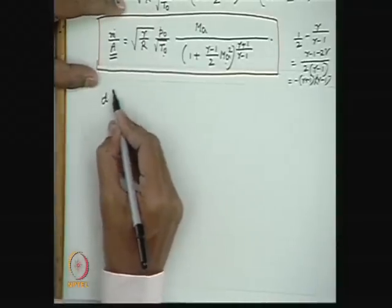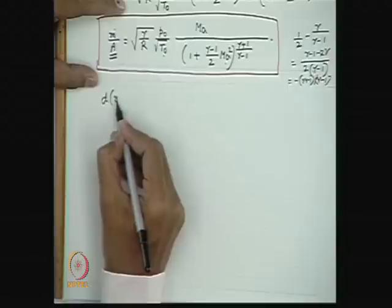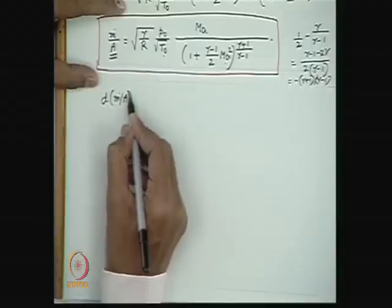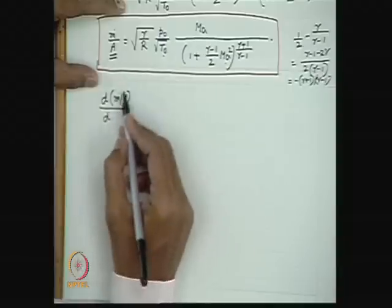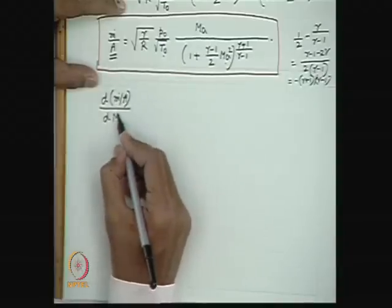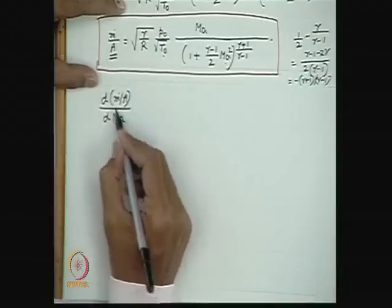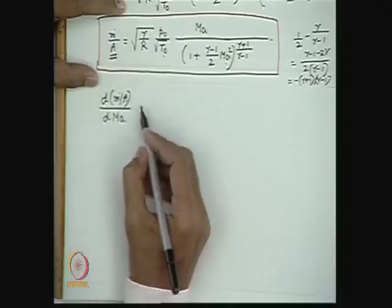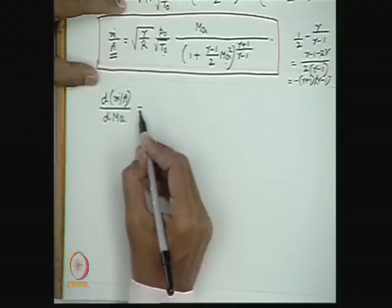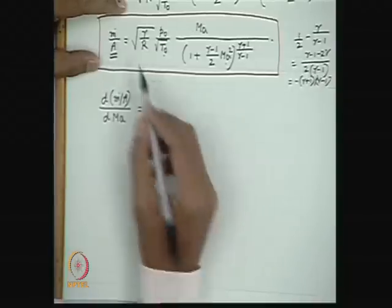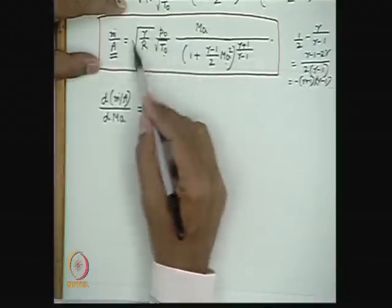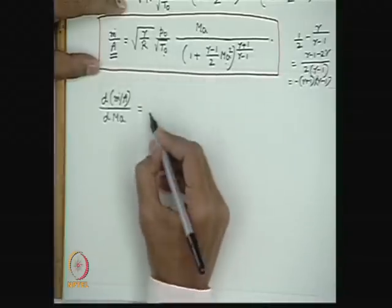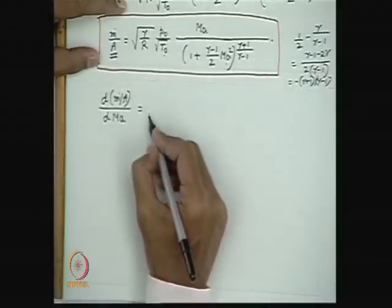Our next task is to find that maximum value of M-dot/A, or the value of the Mach number at which M-dot/A attains its maximum. The simple approach is to set the derivative d(M-dot/A)/dMA equal to zero and find what value of MA satisfies this condition.